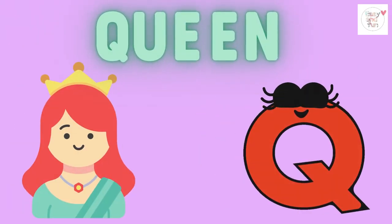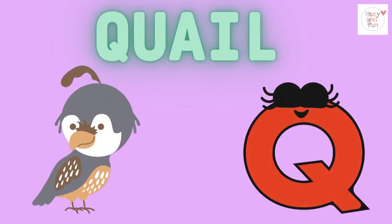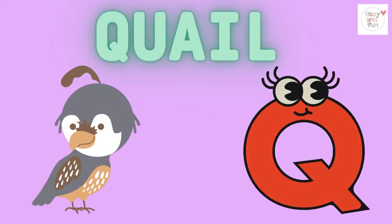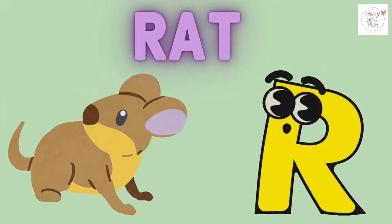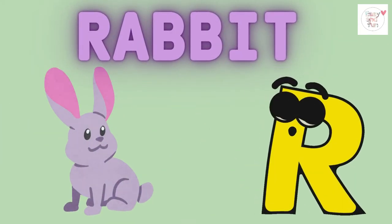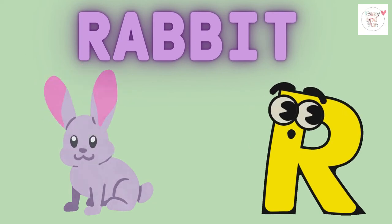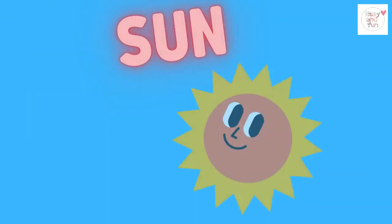Q is for queen, k-k-queen. Q is for quail, k-k-quail. R is for rat, r-r-rat. R is for rabbit, r-r-rabbit.